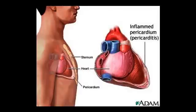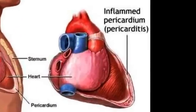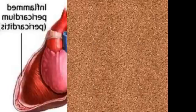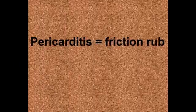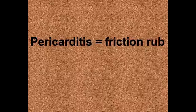Now, if the pericardium becomes irritated or inflamed, you end up with something called pericarditis. When the sac becomes inflamed, instead of gliding smoothly, those layers start to rub against each other — it's very painful for the patient. When you listen to somebody with pericarditis, you may hear something called a friction rub, which sounds like sandpaper rubbing together.